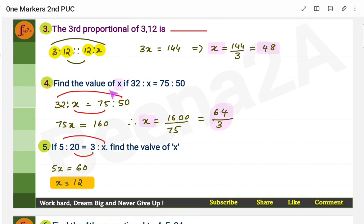Now here find the value of x if 32 is to x is 75 is to 50. What do you do? You'll have to use the proportion formula. Multiply the middle terms, equate it to the product of the extremes. 32 into 50 is equal to 75x and find the value of x. Similarly, here also, you'll have 5 into x equal to 20 into 3. 5x is 60, thereby x is 12.